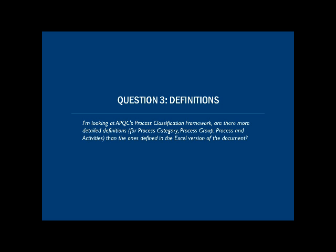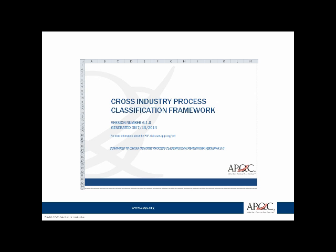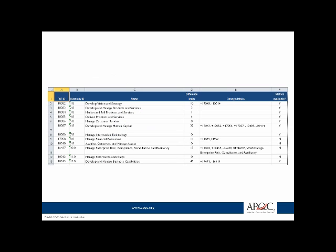Let me take a few minutes and go to the next slide to show you what some of this looks like. This is the opening page — very much Excel, rows and columns. The thing to point out here is that it tells you the name of the industry and the version number. If it's compared to another version, it'll tell you exactly which version it's compared to, around row 23-24. This is a high-level index of all of the categories in the particular framework.